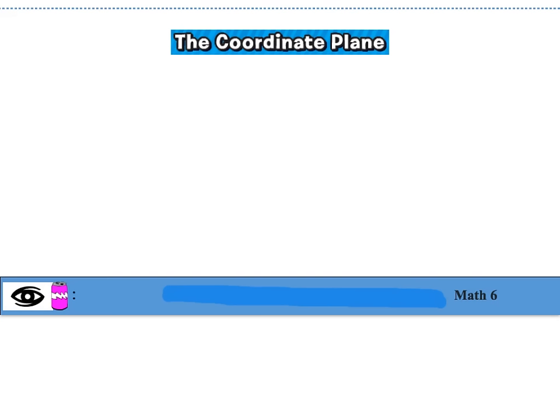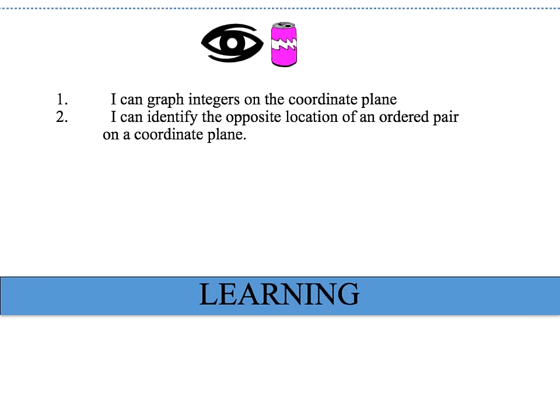Welcome to this lesson on the coordinate plane. Please be sure you have these notes in front of you so that we can begin our lesson. This lesson has two ICAN statements. The first says I can graph integers on the coordinate plane, and the second says I can identify the opposite location of an ordered pair on a coordinate plane.